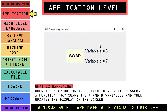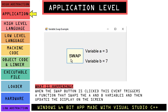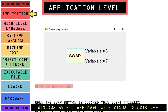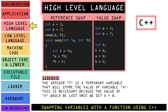We'll start at the top at the application level. Using Visual C++ I created a Windows app that displays two numbers and when you click the swap button the two numbers swap. Remember, the higher the abstraction level the easier it generally is — it's much easier to click on a button to swap two numbers than it is to code it. So let's move down to the programming level.